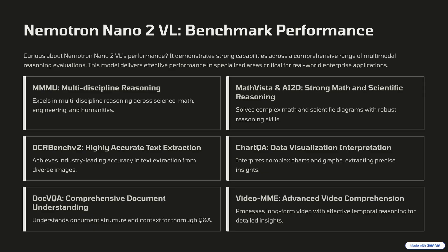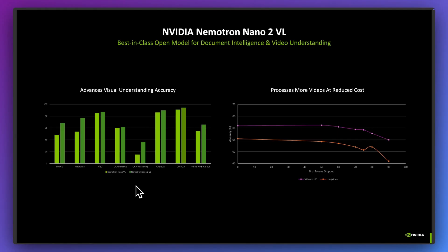This model is best in class for OCR as well as chart reasoning. When we look across the board at the different benchmarks compared to the previous version — the open source Nemotron Nano VL model — we can see the model outperforms on basically every benchmark they have stated.